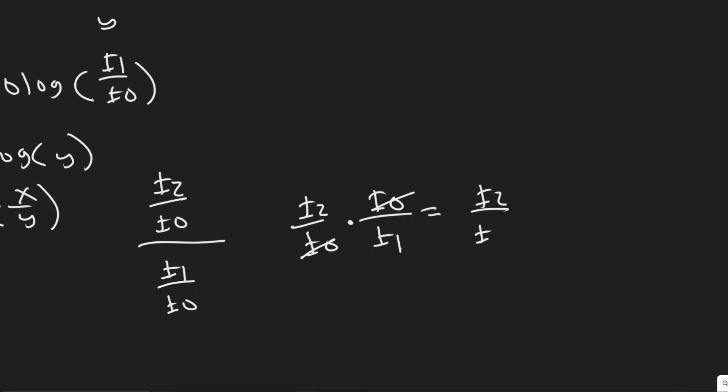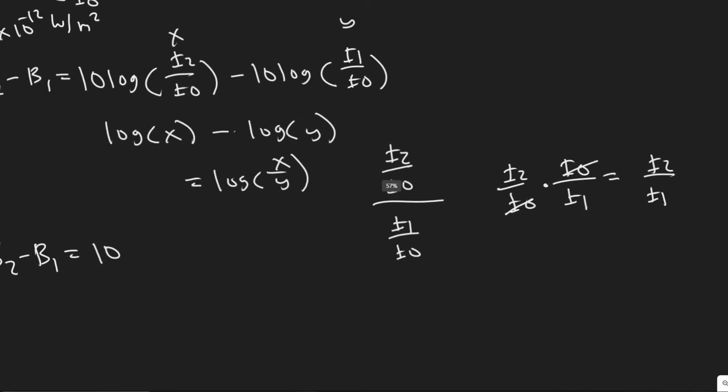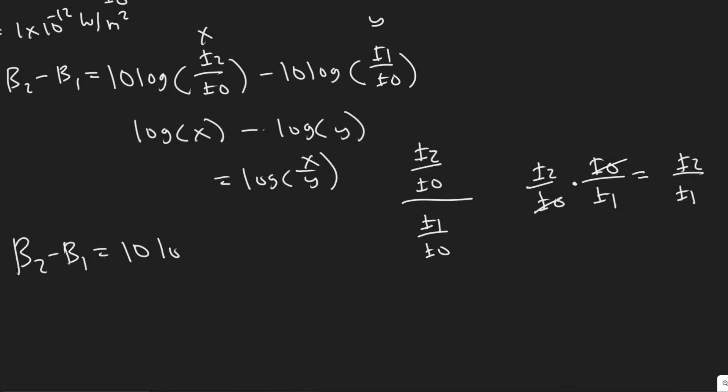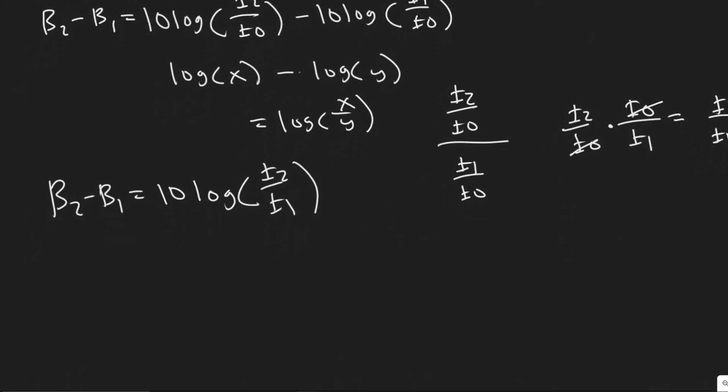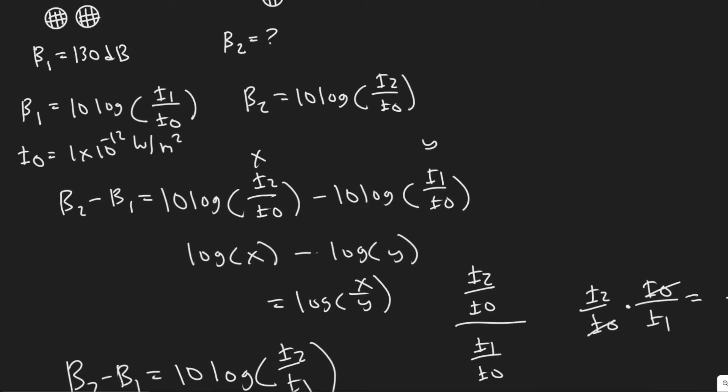You have i₂ over i₁. So what you can do is rewrite this as 10 log, and then our x over y was just i₂ over i₁. So if we want to solve for β₂, it's going to be equal to β₁, all I'm doing is moving it to the other side, plus 10 times the log of i₂ over i₁. Now what is i₂ over i₁? That's what we're going to discuss now.